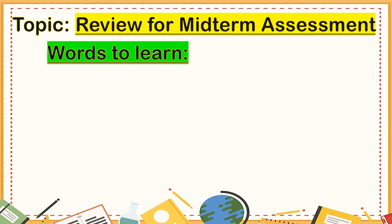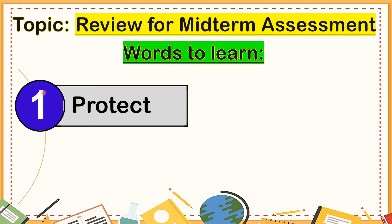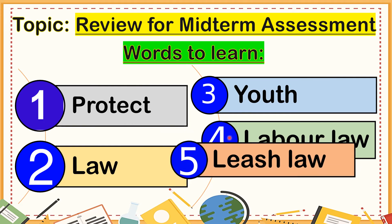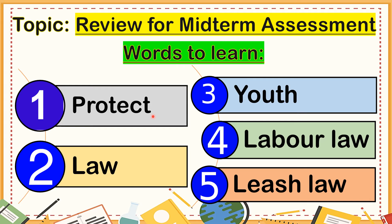Our topic for today is review for midterm assessment. These are the following words to learn. Number one, protect — keeping yourself away from danger. Number two, law — things you have to follow because if not, you will be punished in accordance with the crime you committed. Number three, youth — people between the age of 12 to 20. Number four, labor law — a law or contract between the employer and employee. Number five, leash law.